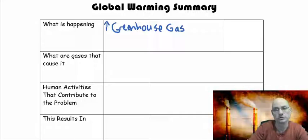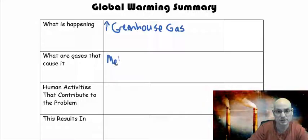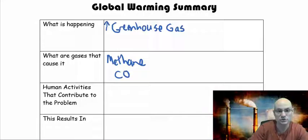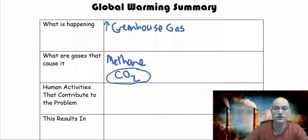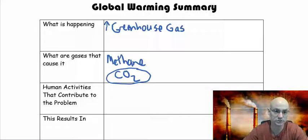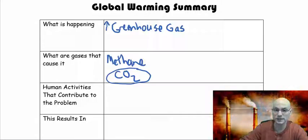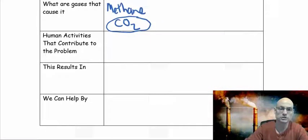The two major players are methane and CO2. I'm even going to circle CO2 because this is the one that we seem to be contributing the most increase to. It's also the one that trees have the most ability to remove if we let them.